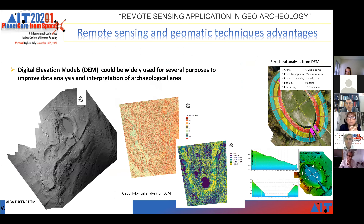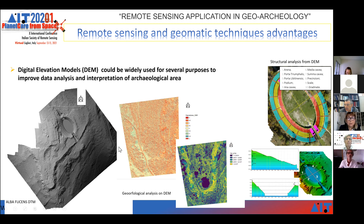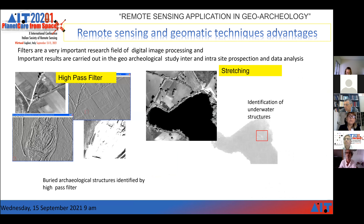Another interesting result is the digital elevation model. A digital elevation model can be widely used for several purposes to improve data analysis and interpretation of the archaeological site. In this slide, you can see on the left the DTM — digital terrain model — of the archaeological site of Alba Fucens, used for geomorphological analysis. On the right, you can see the digital elevation model of the arena of the Alba Fucens archaeological site, used for other kinds of structural analysis.